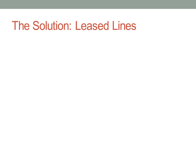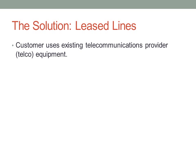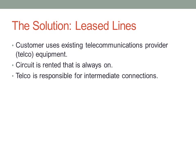The solution to this is leased lines. Leased lines use existing telco equipment to provide a simple data connection that's always on. You rent the circuit from the telephone company, they provide a switched circuit for you, and the circuit is on. The telco is responsible for intermediate connections, so you don't have to worry about burying lines on other people's property. If you do need a faster line, you pay the telco more.